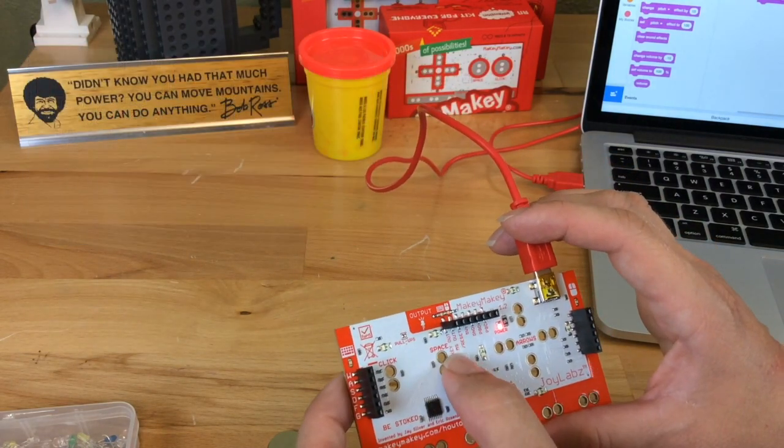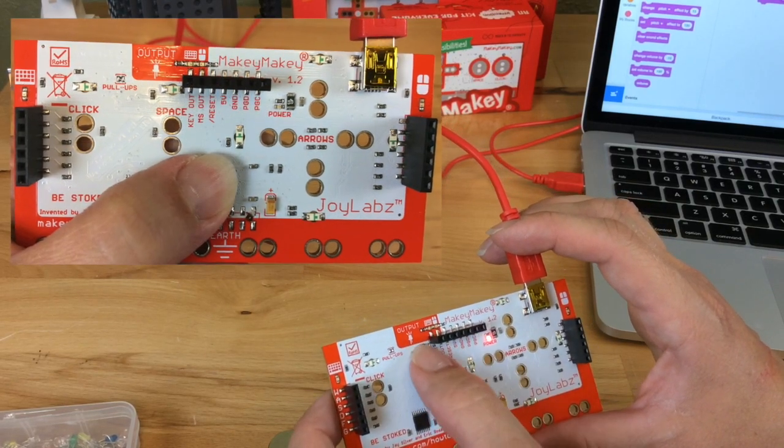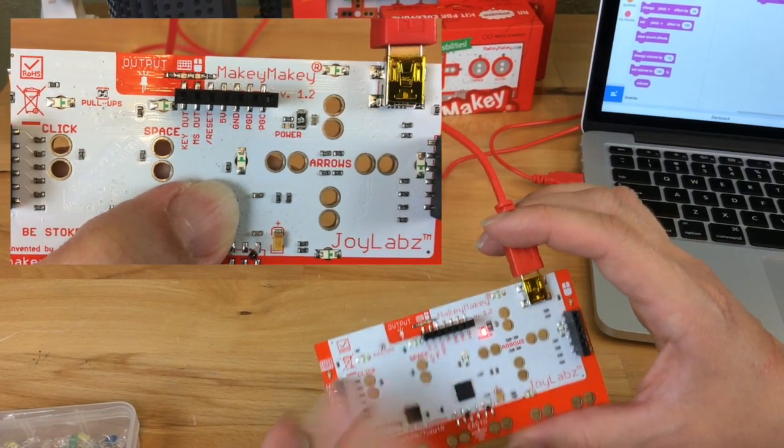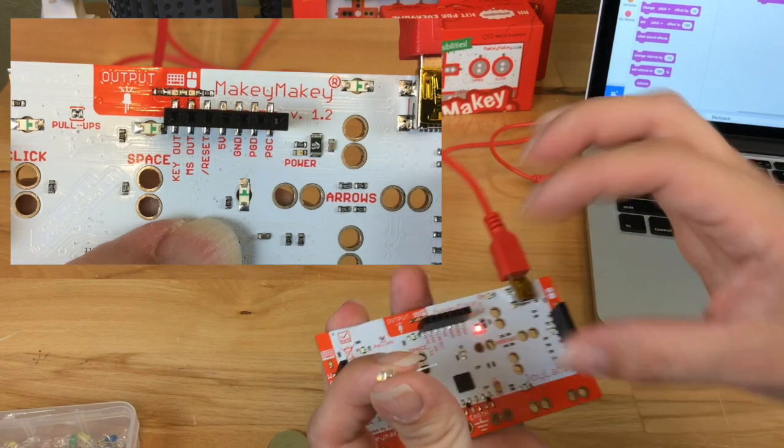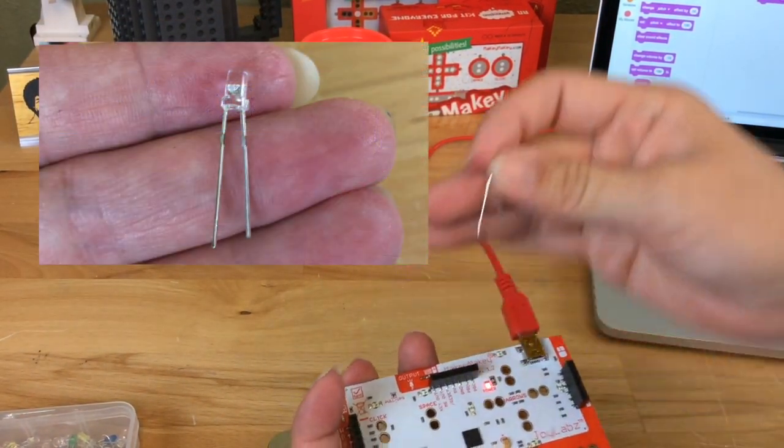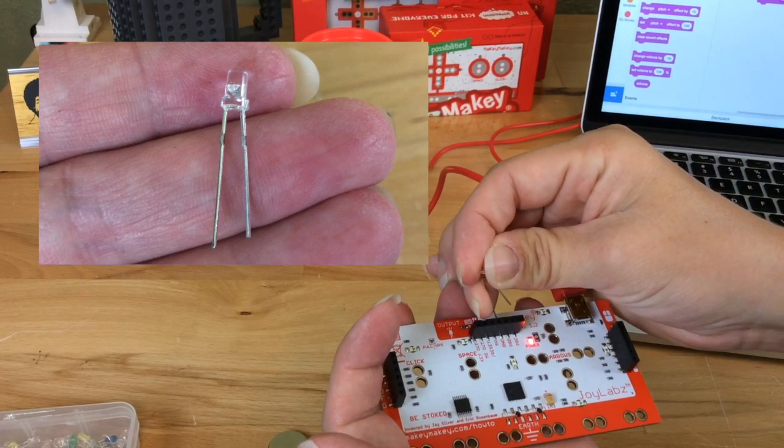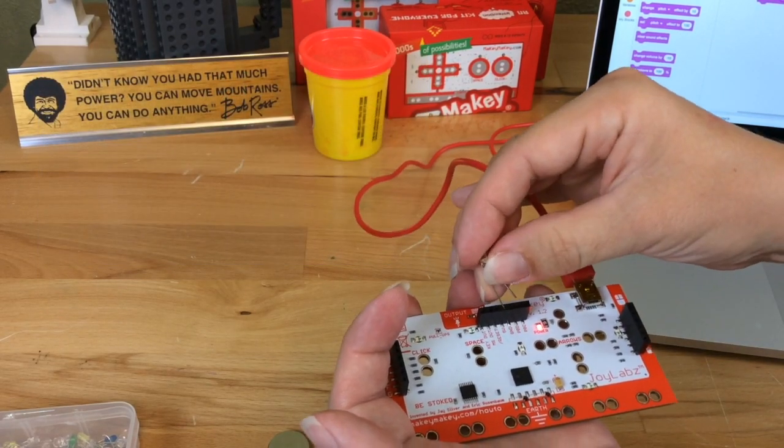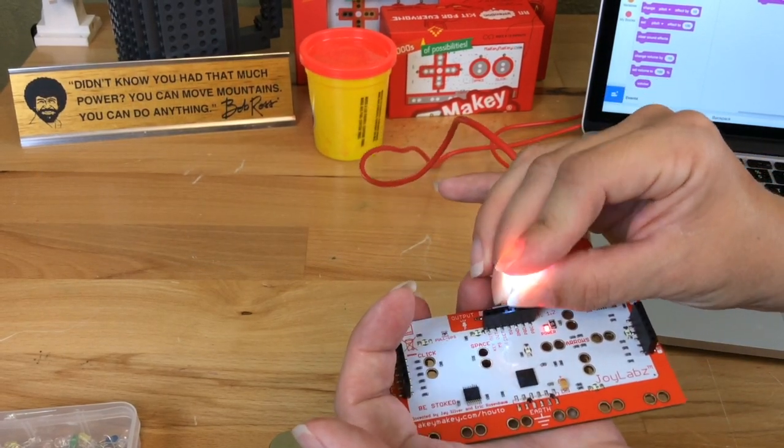But on the top is what we're going to look at today, and this is actually our only output that we have with Makey Makey. So you can actually make a light light up if you take the positive leg of the LED, which is the longer side, and place it in 5-volt, and the negative side in ground.